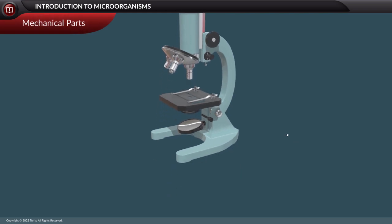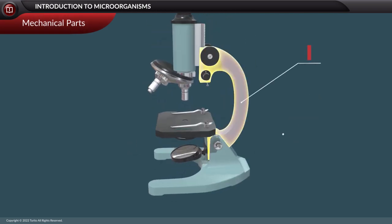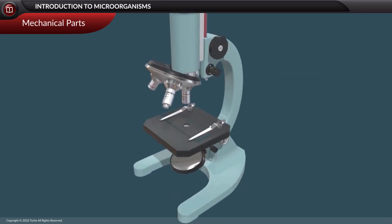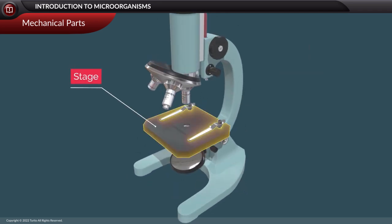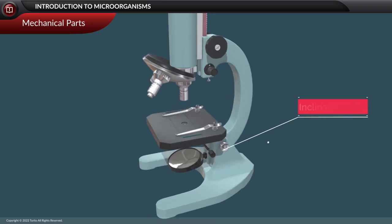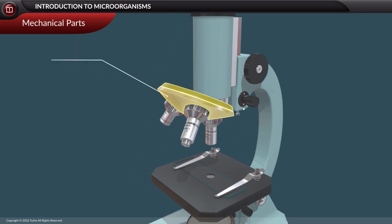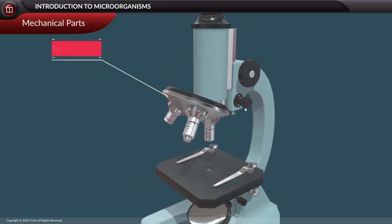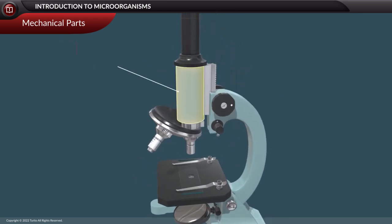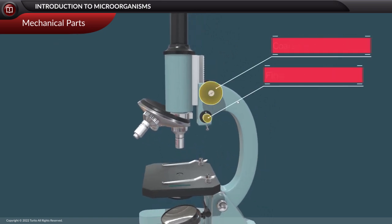The mechanical parts of a compound microscope include: base, arm, stage, inclination joint, clips, nose piece, body tube, fine adjustment knob, and coarse adjustment knob.